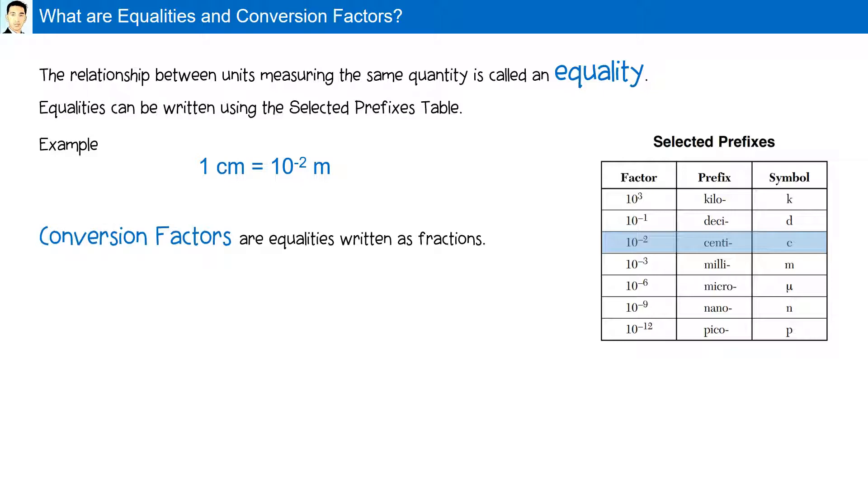Conversion factors are equalities written as fractions. Two conversion factors are always possible from an equality. For example, from our equality above 1 centimeter is equal 10 to the minus 2 meters, we can have two conversion factors: 1 cm over 10 to the minus 2 meters or 10 to the minus 2 meters over 1 cm.